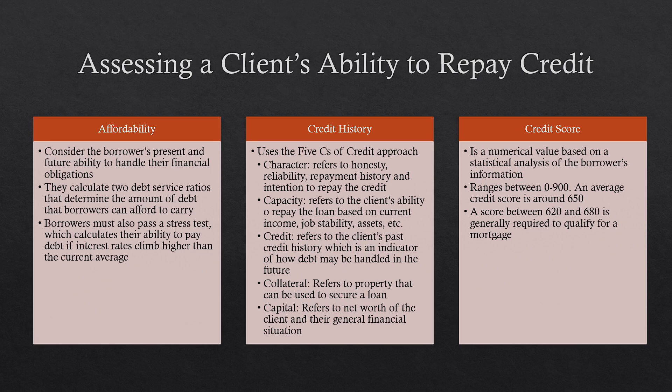Financial institutions also look at the client's credit score — a numerical value based on statistical analysis of the borrower's information, ranging between 0 and 900. An average credit score is around 650, and a score between 620 and 680 is generally required to qualify for a mortgage.